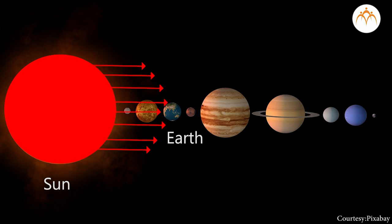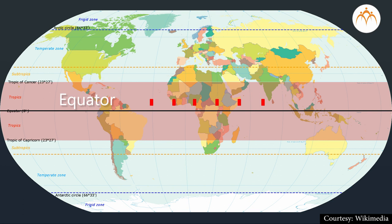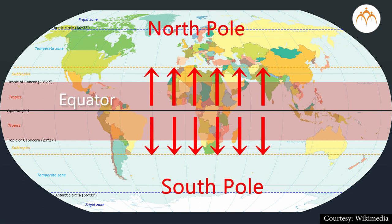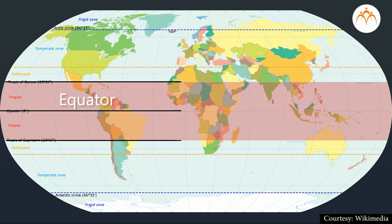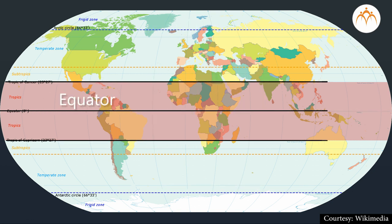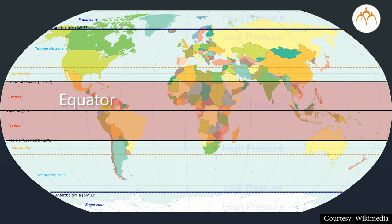The earth receives energy in the form of heat. The distribution of heat is unequal as we go from the equator to the north pole and south pole, thereby creating temperature zones. We have already learnt this in our previous year.